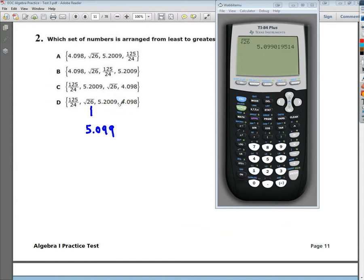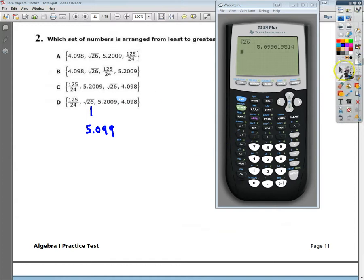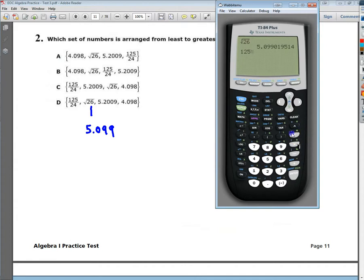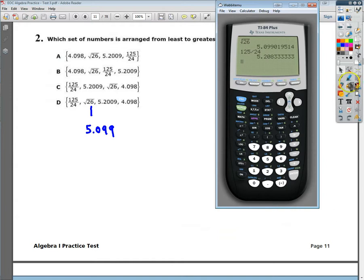These two are already in decimal form, so I just need to deal with 125 over 24. You can do that as a division, if you want, or you can punch it in as a fraction. If you get alpha and y equals on the TI-84+, your fraction menu comes up, and you just convert it. But I'm just going to do the division instead, save myself a little time. For this one, I need to write down 5.208.